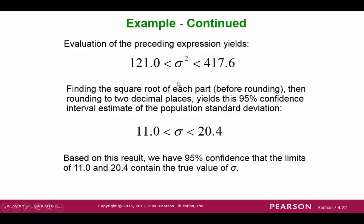After simplifying, our variance interval is approximately 121 to 417. These are variance values, so to convert to standard deviation we take the square root, giving a standard deviation between 11 and 20.4. These are actual IQ score points. We can say that we are 95% confident that the limits of 11 and 20.4 contain the true value of the population standard deviation.